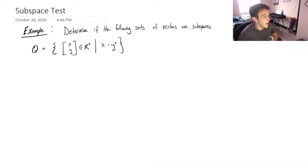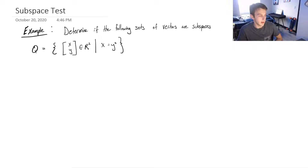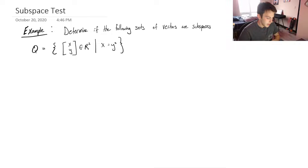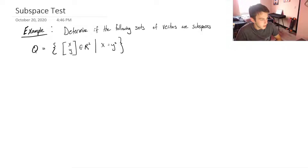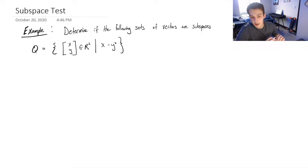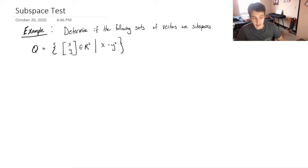We have this set Q, and we're asked to determine if this set is a subspace of its respective vector space, which in this case is R². Q is defined as the set of vectors (x, y) in R² where x must equal y squared. The first thing I always do is check if the zero vector is in the set. If the zero vector is not in Q, you can immediately say Q is not a subspace of R².